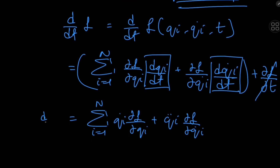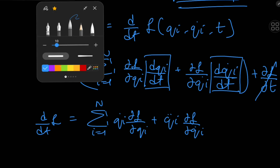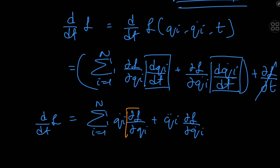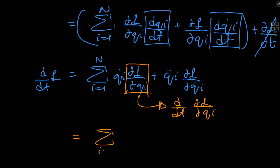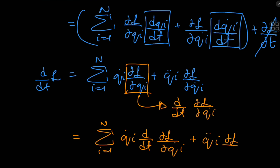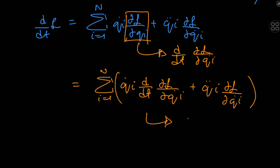We have the partial derivatives of the Lagrangian with respect to the generalized coordinates and generalized velocities, and we know how these are related from the equations of motion: ∂L/∂qᵢ equals the time derivative of ∂L/∂q̇ᵢ. So we can write the expression as the sum from i = 1 to n of q̇ᵢ times d/dt(∂L/∂q̇ᵢ) plus q̈ᵢ times ∂L/∂q̇ᵢ — and if you look closely, this is just the product rule applied to the total time derivative of q̇ᵢ times ∂L/∂q̇ᵢ.